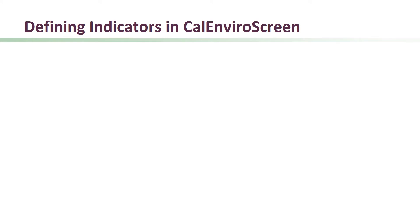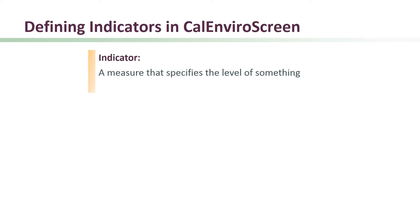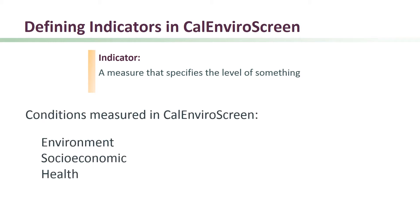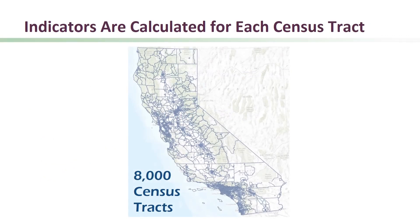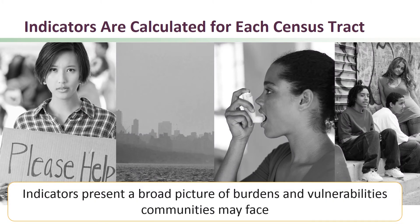First, it's important to define the term indicator as it's used in CalEnviroScreen. An indicator is a measure that specifies the level of something. In CalEnviroScreen, indicators provide a measure of environmental, socioeconomic, or health conditions. These indicator measures are calculated for each census tract across the entire state. The indicators help to present a broad picture of the burdens and vulnerabilities communities may face from pollution across the state.